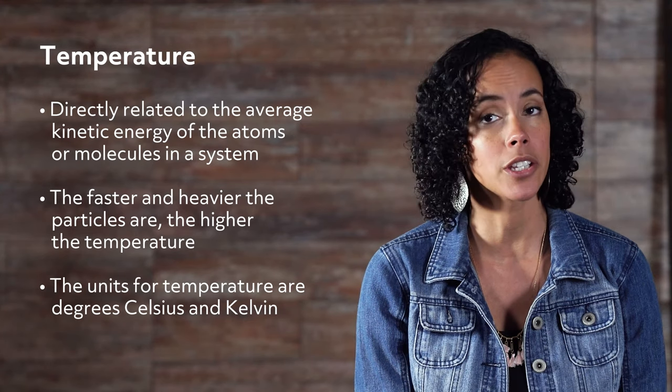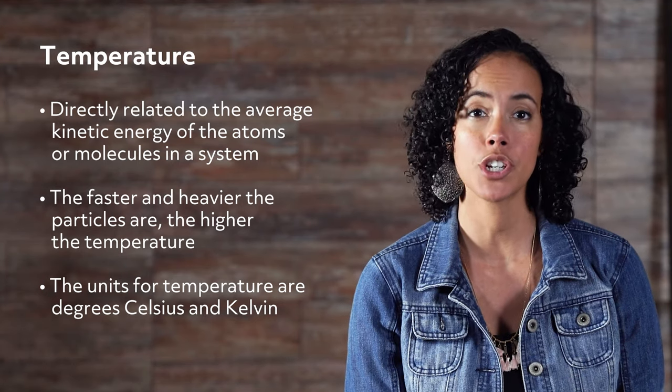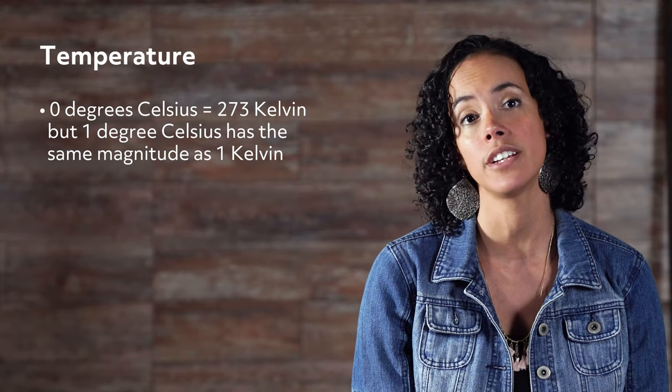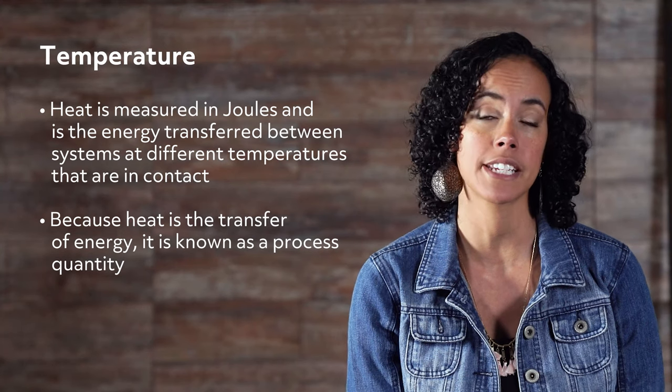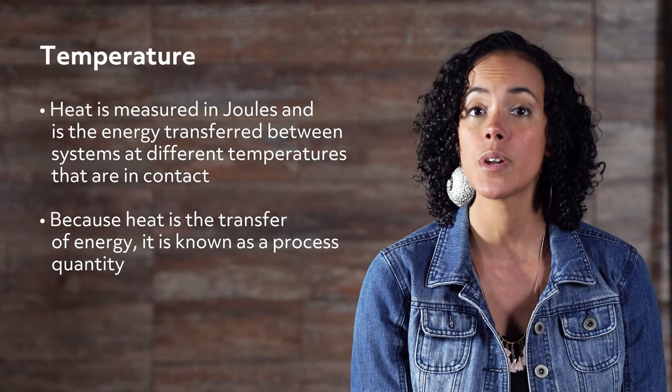Hello and welcome to this video on specific heat capacity, a constant that relates heat transfer to changes in temperature. Temperature is directly related to the average translational kinetic energy of the atoms or molecules in a system — the faster and heavier the particles are, the higher the temperature. The units for temperature are degrees Celsius and Kelvin. Remember, zero degrees Celsius equals 273 Kelvin, but one degree Celsius has the same magnitude as one Kelvin. Heat is measured in joules and is the energy transferred between systems at different temperatures. Because heat is a transfer of energy, it is known as a process quantity. When heat is absorbed or released by a system, the temperature changes — how much depends on the specific heat capacity of that substance.